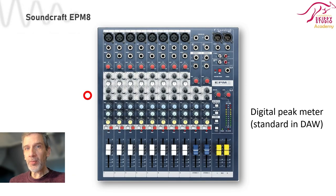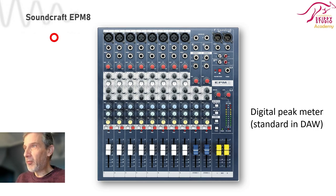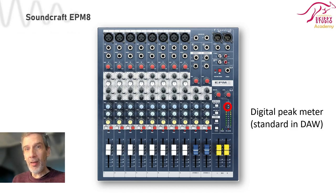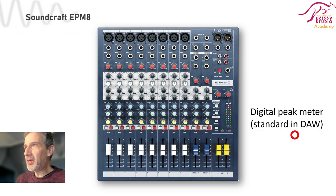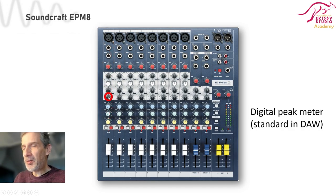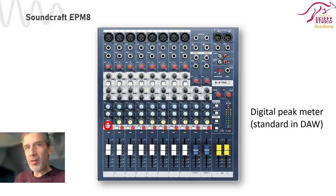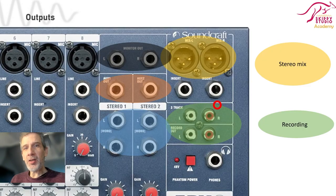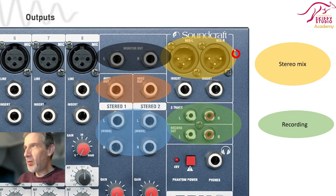There are also much simpler mixers, like the Soundcraft shown here. These are generally very cheap, so everyone can afford them. You also see what is called a digital peak meter, so you can monitor the level of your audio. These types of meters you also find in the DAW. One of the things you see is that there are many channels that all have the same anatomy — the same knobs and faders. If you understand one of these strips, you already understand a large part of a mixing console. In the upper right part of these mixers, you find the output. Here you have your main output, which is basically your stereo mix of everything you are mixing.